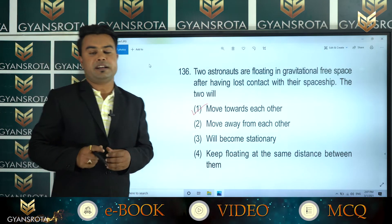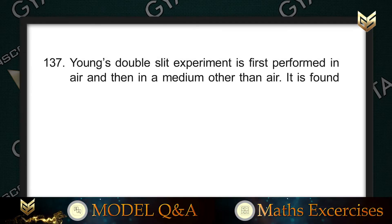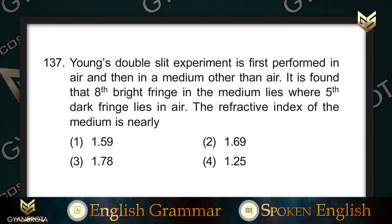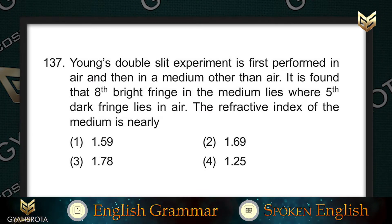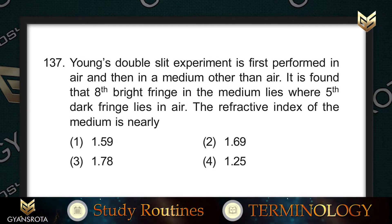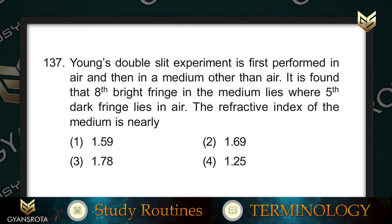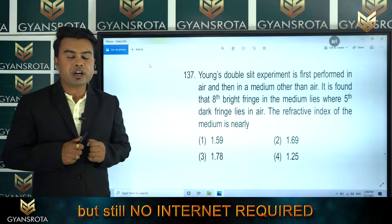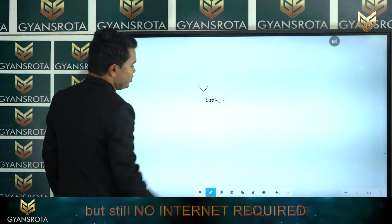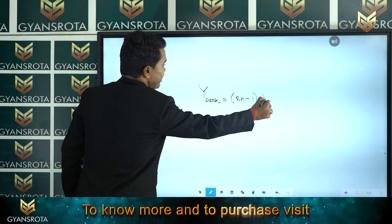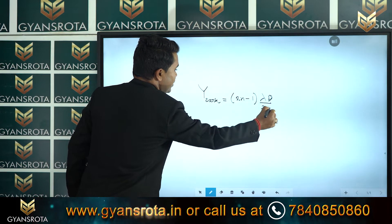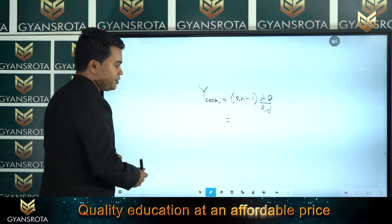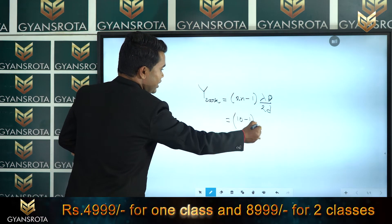Question number 137: Young's double slit experiment is first performed in air and then in a medium other than air. It is found that the eighth bright fringe in the medium lies where the fifth dark fringe lies in air. We need to calculate the refractive index of the medium. This is from the chapter wave optics. For a dark fringe, the position is (2n−1)λD/2d. For the fifth dark fringe, n = 5, so it becomes 9λD/2d.